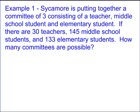Just real quick, let's talk about some examples. Sycamore is putting together a committee of three consisting of a teacher, a middle school student, and an elementary student. If there are 30 teachers, 145 middle school students, and 133 elementary students, how many committees are possible? Well, these are independent events. Whenever you have independent events, you always use the fundamental theorem. So there are 30 ways to select from the teachers, 145 middle school students, and 133 elementary. You just multiply that together, and you get 578,550. That's a fundamental theorem of counting problem.